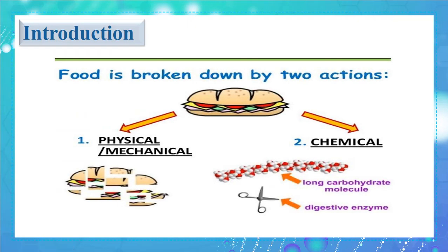While food is in the digestive system, it undergoes mechanical and chemical digestion. Mechanical digestion is a physical process, mostly occurring in the mouth during chewing — food is transformed into smaller pieces. Chemical digestion, however, is a chemical process; it begins in the mouth and continues in the stomach and the small intestine, transforming food from complex molecules into smaller ones.